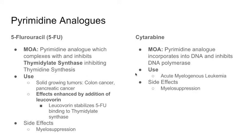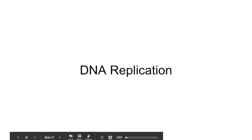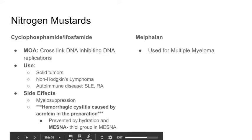This ends our discussion of DNA synthesis inhibitors. Next we'll talk about drugs that stop DNA replication. We're back continuing with the anti-neoplastics. Alkylating agents stop DNA replication by donating an alkyl group to the DNA, making strands stick together so DNA polymerase can't pass through.